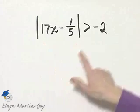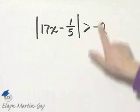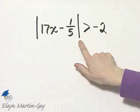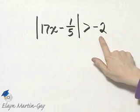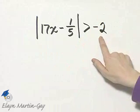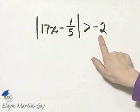Let's solve this absolute value inequality. Now notice this is an absolute value greater than a negative number. So let's think our way through this because of this negative number.